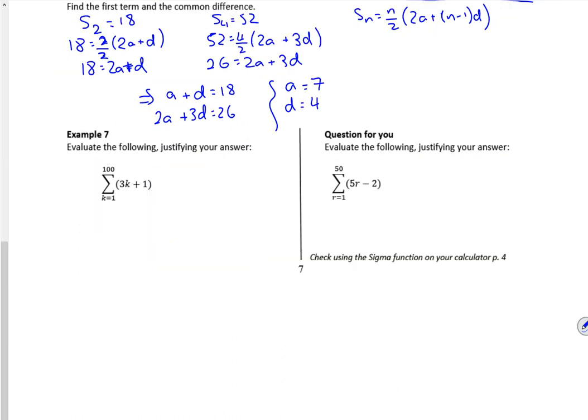Alright, so I'll look at example 7. So it says evaluate the following, just find an answer. So I want the first 3 terms. So if I put 1 in, it's 4. If I put 2 in, it's going to be 7. If I put 3 in, it's going to be 10. So I know from that that a is 4 and d is 3. Now what this wants is the sum of the first 100 terms. And I'm very aware that I'm really not telling you, so I'm going to stop it and carry on.